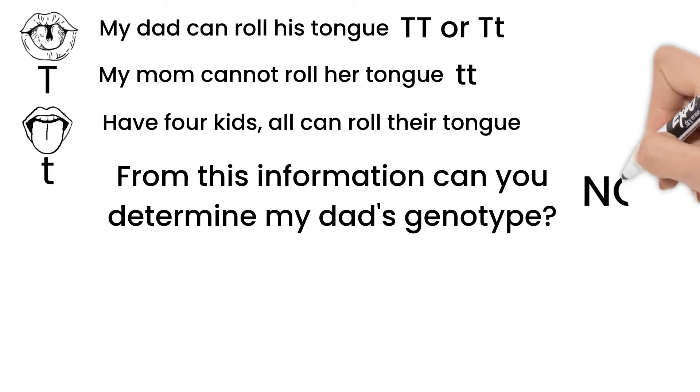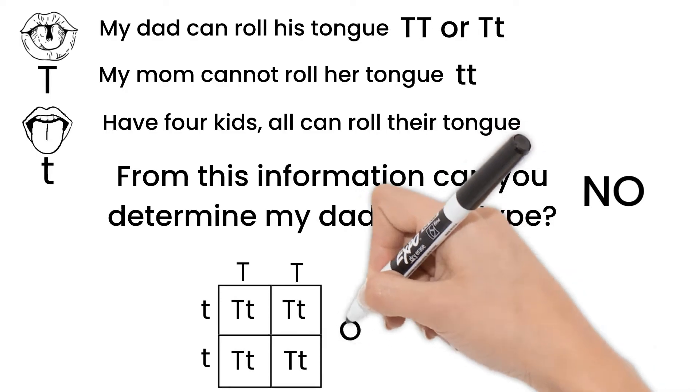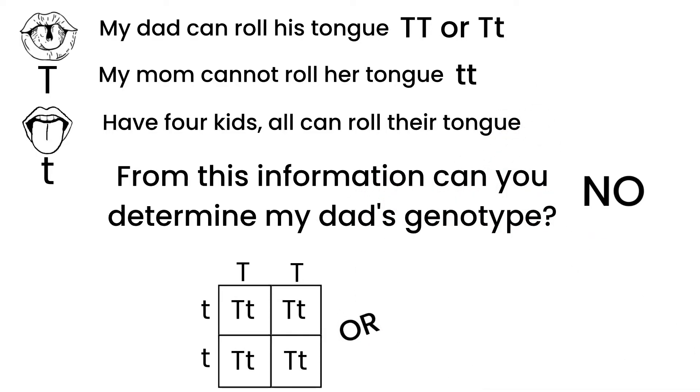Statistically, no. Four isn't a big enough number to be sure. Maybe my dad is homozygous dominant and that's why we all can roll our tongues. Or we all just happen to get the dominant gene from him. And if my parents were to have a fifth child, that one would be recessive for the trait. So we cannot determine my dad's genotype.